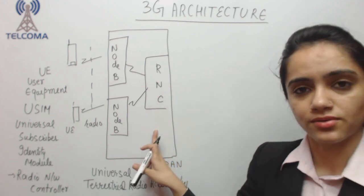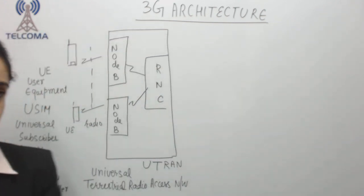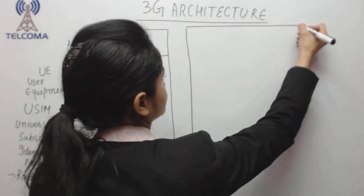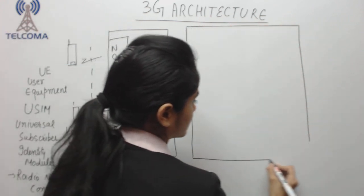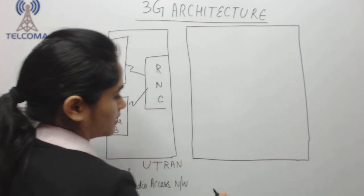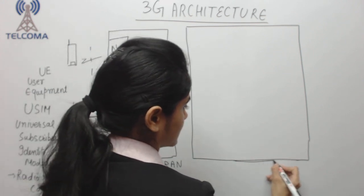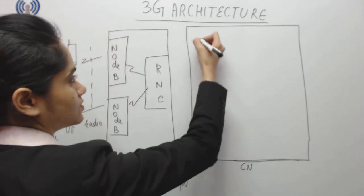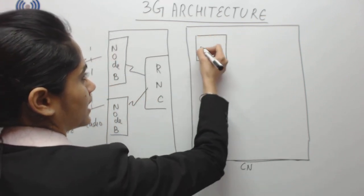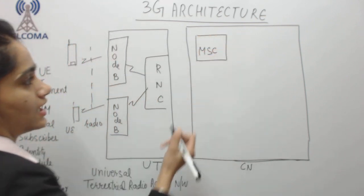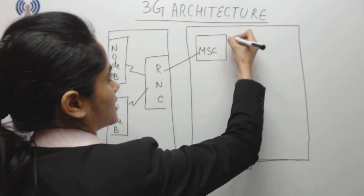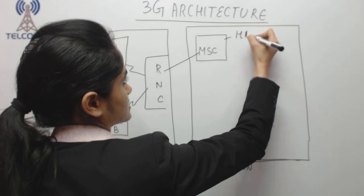Now if we go to the core network, which is this one as core network. Here in this unit for voice we have MSC. As in case of GSM, we have studied that MSC has databases like HLR.